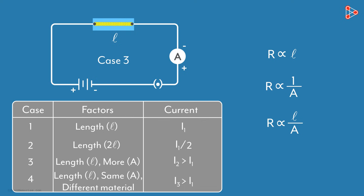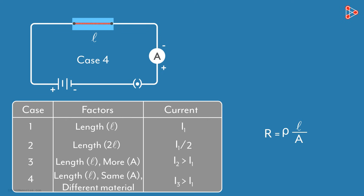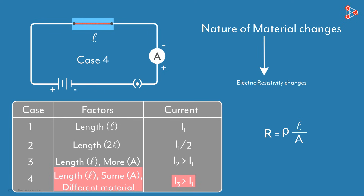If we introduce a constant rho, it can be written as a formula. This is the constant of proportionality, and is called the electric resistivity of the material of the conductor. In the fourth case, we saw that as the nature of the material changes, the current flowing through the conductor also changes — and that's because as the nature of the material changes, its electric resistivity also changes accordingly.